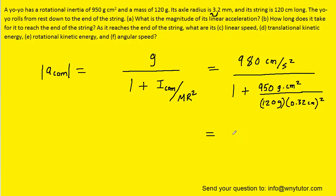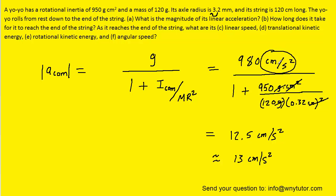When we crunch this down, we should get approximately 12.5 centimeters per second squared, or rounding to proper sig figs would give us 13 centimeters per second squared. So this would be the correct answer to part A. Notice in the setup that the grams in the numerator canceled with the grams in the denominator. The centimeters squared canceled with the centimeters squared, and that left us with the unit of centimeters per second squared for the final answer.